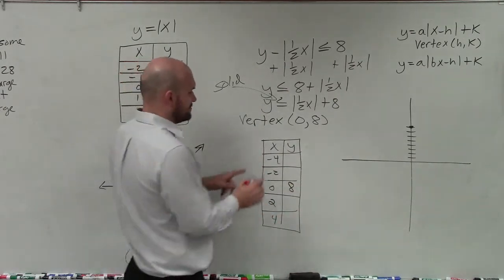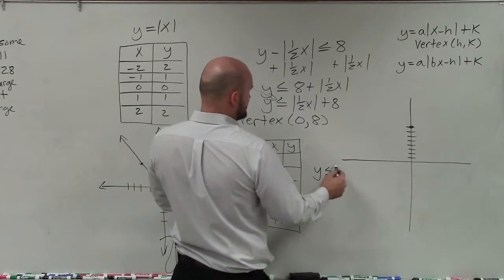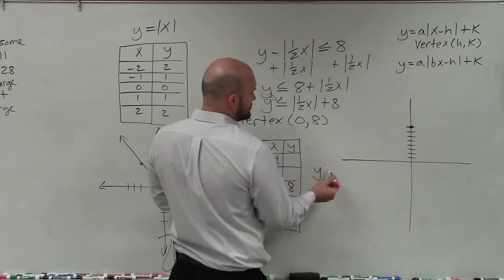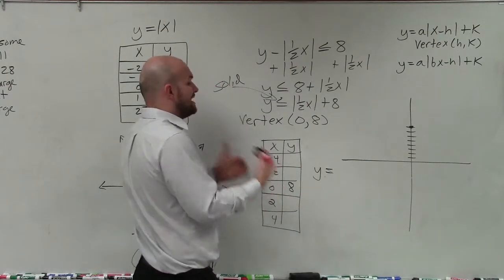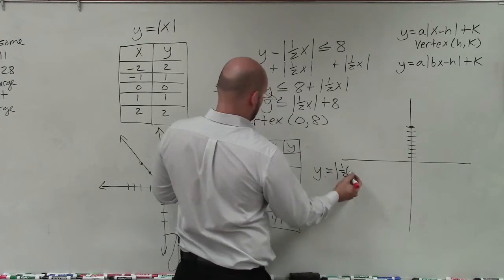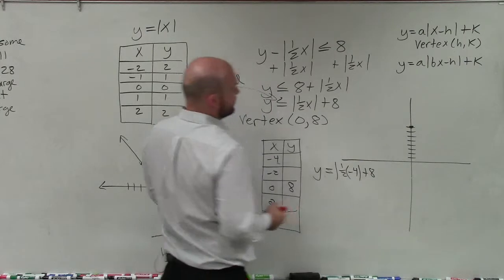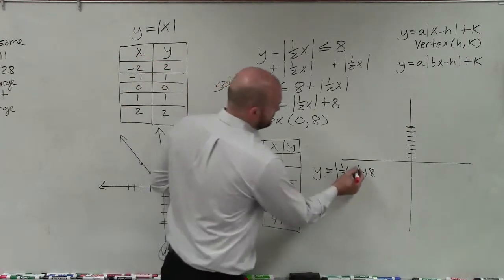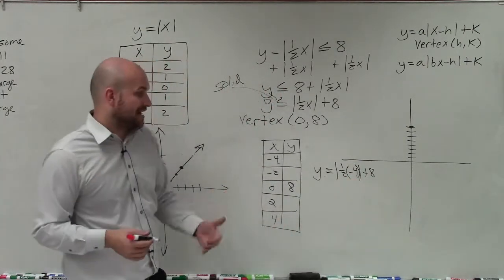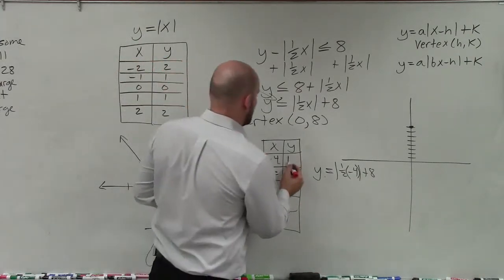To define the value of those two points, I need to just plug in those values. So y equals, let's use an equation because we want to find the value. We want to know what is y equal to when x equals this value. So I have 1½ times negative 4 plus 8. Negative 4 times 1½ is negative 2, absolute value of negative 2 is 2, 2 plus 8 is 10.